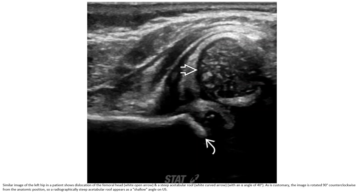This is the left hip ultrasound of the same patient showing the dislocated left femoral head and the shallow acetabular roof, with an alpha angle of 40 degrees. As is customary, the image is rotated 90 degrees counterclockwise from the anatomical position.